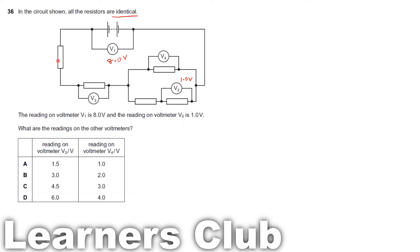Let's call the resistance of each resistor R since they are identical. This resistor is in series with the one showing 1.0V. When identical resistors are in series, they share the same potential difference, so this resistor also gets 1.0V.